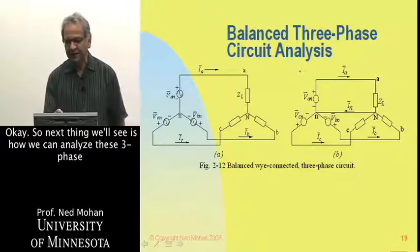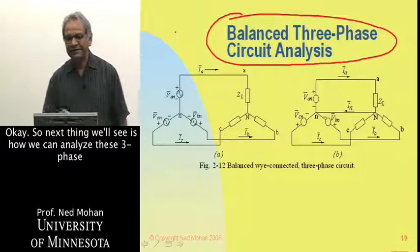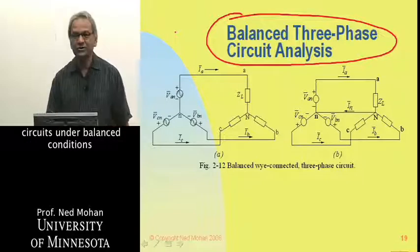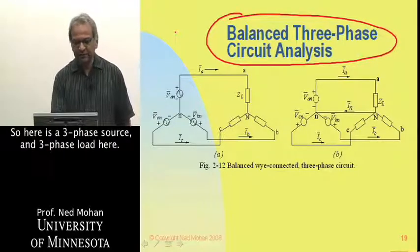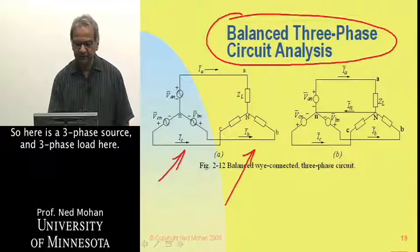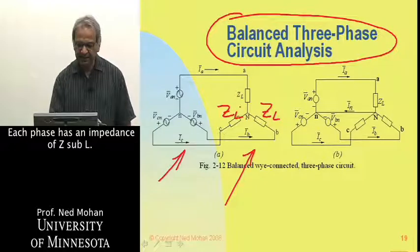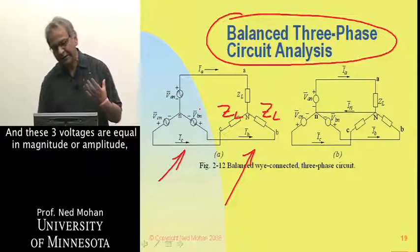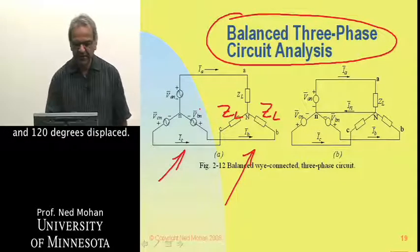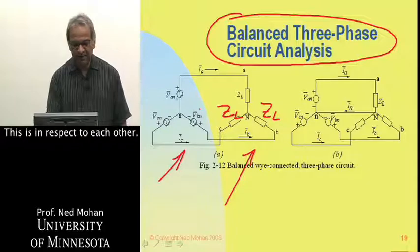The next thing we'll see is how we can analyze these three-phase circuits under balanced conditions by per-phase analysis. Here is a three-phase source and three-phase load. It's balanced — each phase has an impedance of Z sub L — and these three voltages are equal in magnitude and 120 degrees displaced with respect to each other.